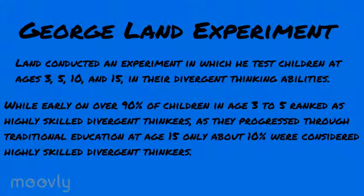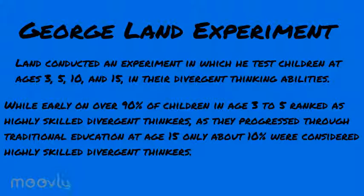A key driver within the modules we'll examine later is the George Land experiment. This was a revolutionary experiment that really piqued interest in divergent thinking. Land conducted an experiment where he tested children at various ages — ages 3, 5, 10, and 15 — in their divergent thinking abilities. For example, he would place five objects in front of a child and ask how they would use those objects. At ages three to five, students were coming up with an extraordinary number of solutions.